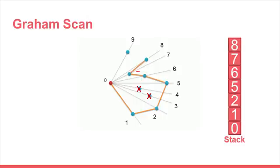The next point is 8. A right turn is made at 7 coming from 6. So we need to backtrack. 7 is popped from the stack. So we examine the road from 6 to 8. We see a right turn. So we need to backtrack more. We examine 5 to 8. We see a left turn. So we can stop backtracking and add 8 to the stack. It contains 0, 1, 2, 5, and 8.